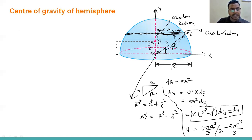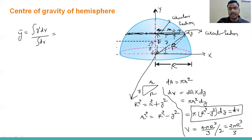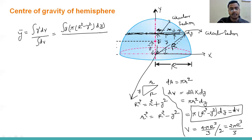Now let's write the equation to calculate y-bar. The formula is: y-bar equals integration of y-dash dV divided by integration of dV. We put the value of dV, and y-dash will be y — the distance of the segment centroid from the x-axis. So the numerator becomes integration of y into pi(R² - y²) dy. The denominator integration of dV gives us V, the volume of the hemisphere.